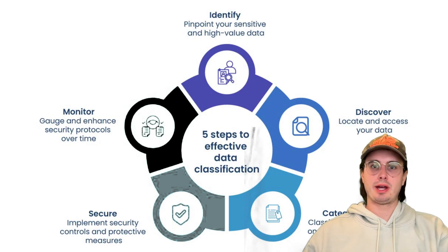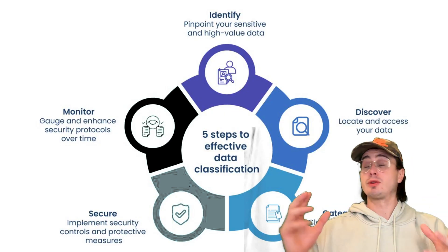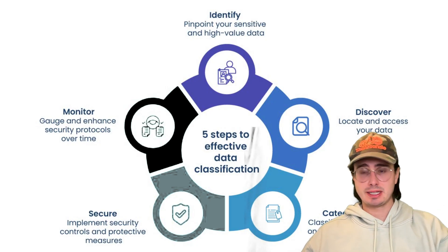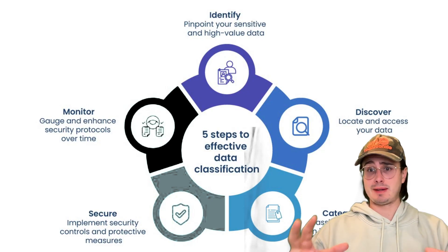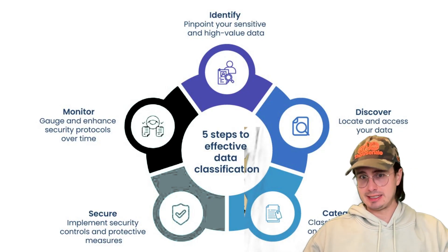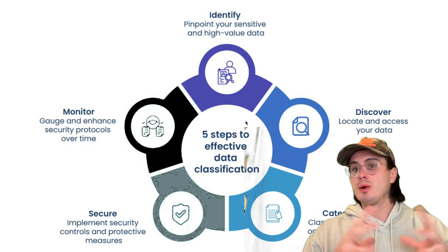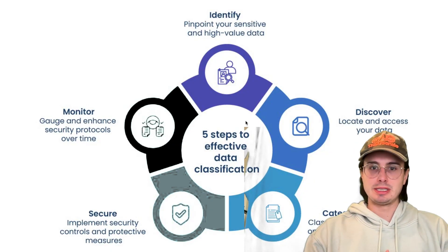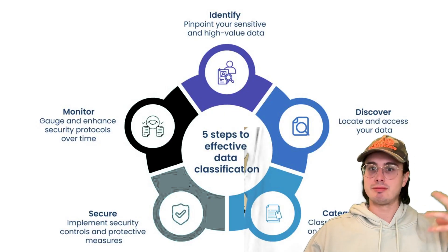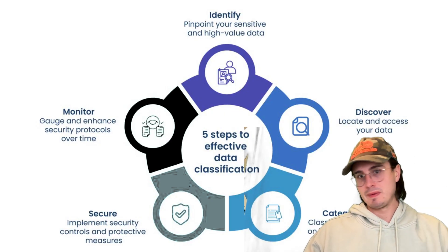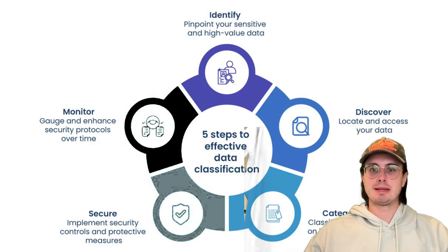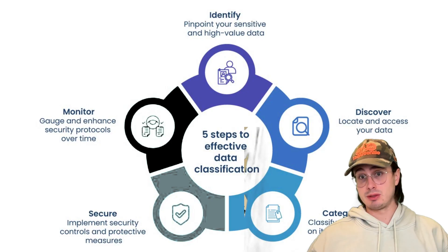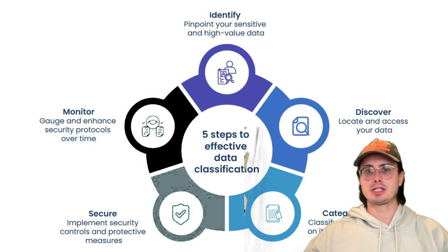The first thing you want to think about as a data engineer focusing on security and compliance is starting with a data classification framework. Establishing a clear framework allows you to identify, organize, and protect sensitive data appropriately — but you don't want to protect all data at the same sensitivity level because it gets expensive. A typical setup defines classification levels: public (information shared freely without risk), internal (restricted to organization members), confidential (sensitive business information requiring protection), and restricted (highly sensitive data requiring maximum security controls).